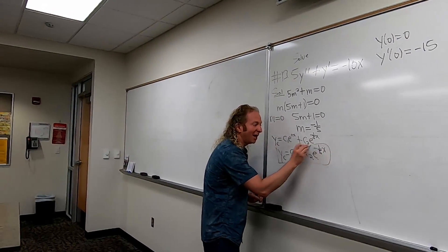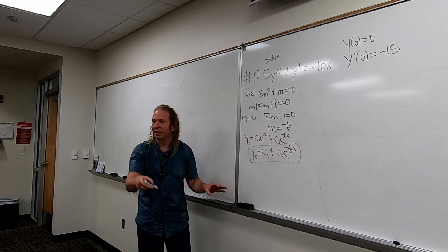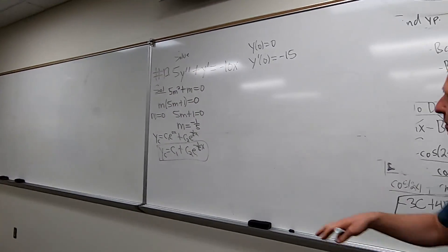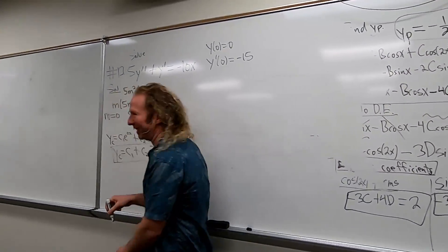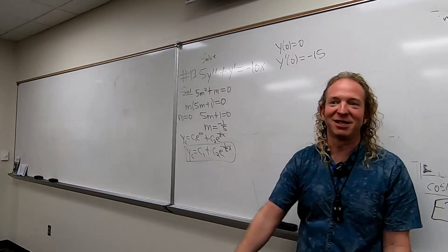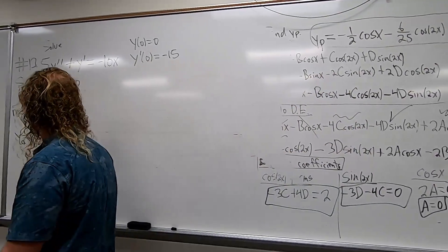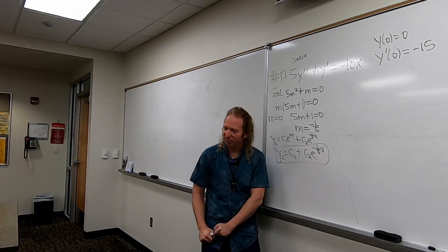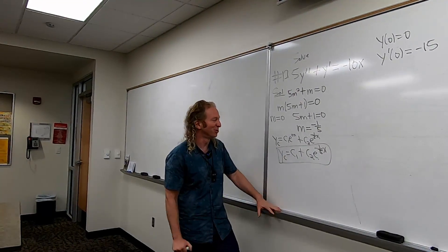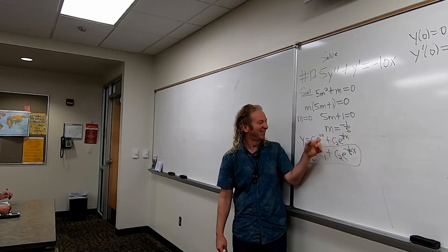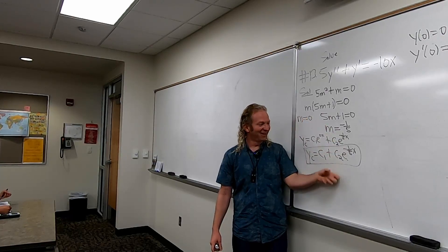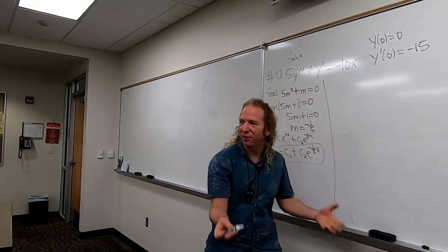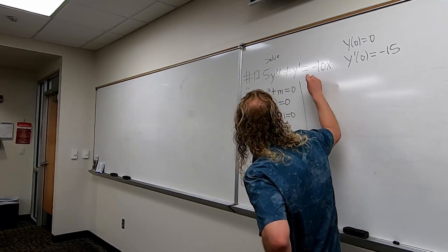So I'm going to put this in a box. It helps on the test if you're doing this problem to put stuff in boxes. Don't box everything, but put stuff in boxes. So that's Y sub C. So now let's find the form of YP. So I'm just going to put form of YP so we know what's going on.